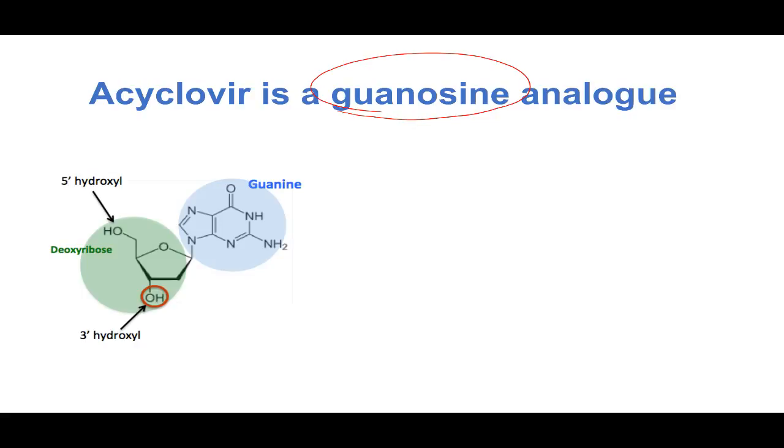This is deoxyguanosine because the sugar is deoxyribose. If you add a phosphate it will become guanosine phosphate, that is GMP, guanosine monophosphate. Where are we going to add the phosphate? To the 5' or 3'?